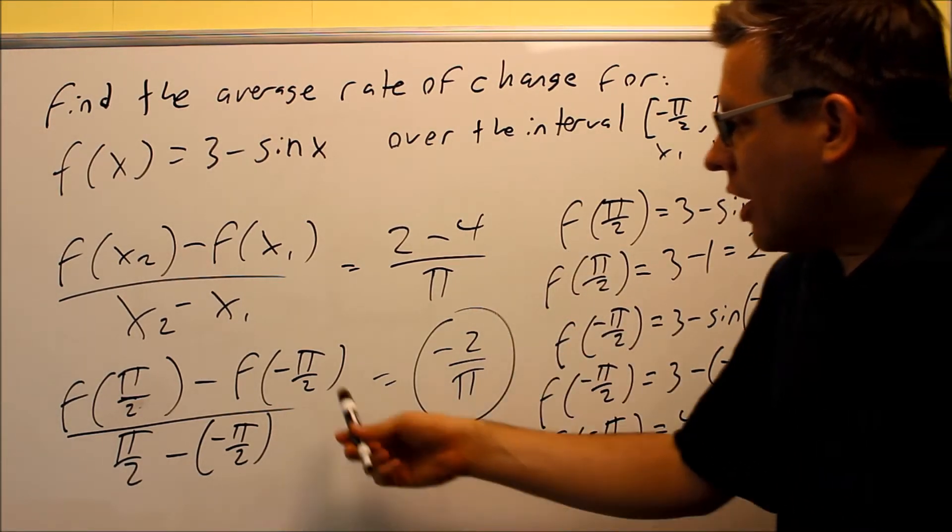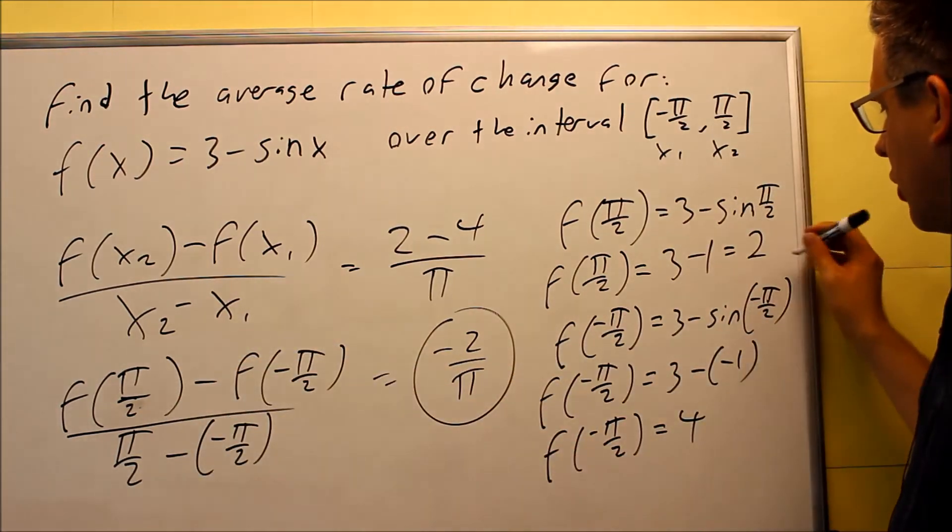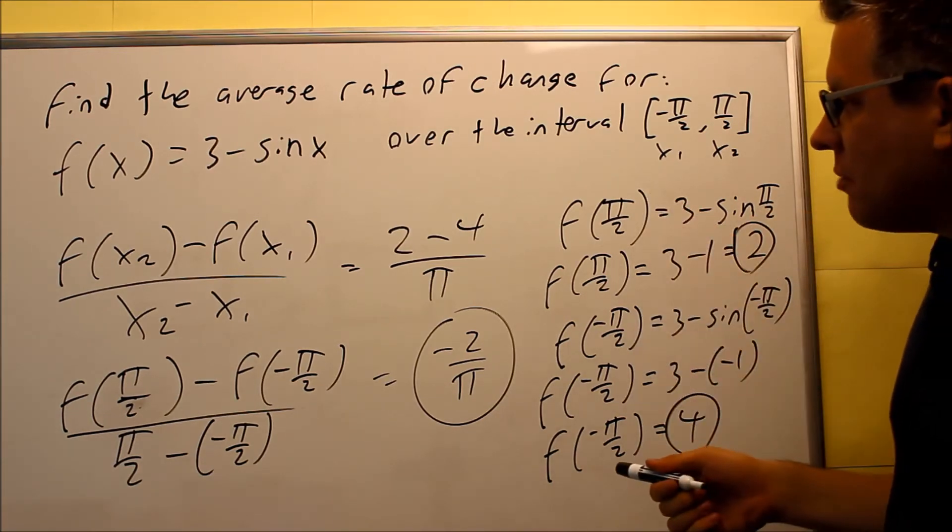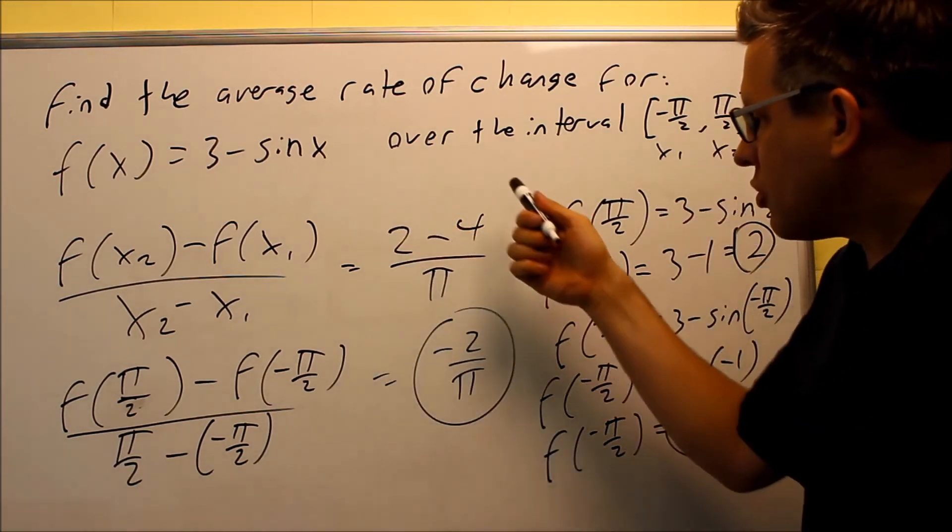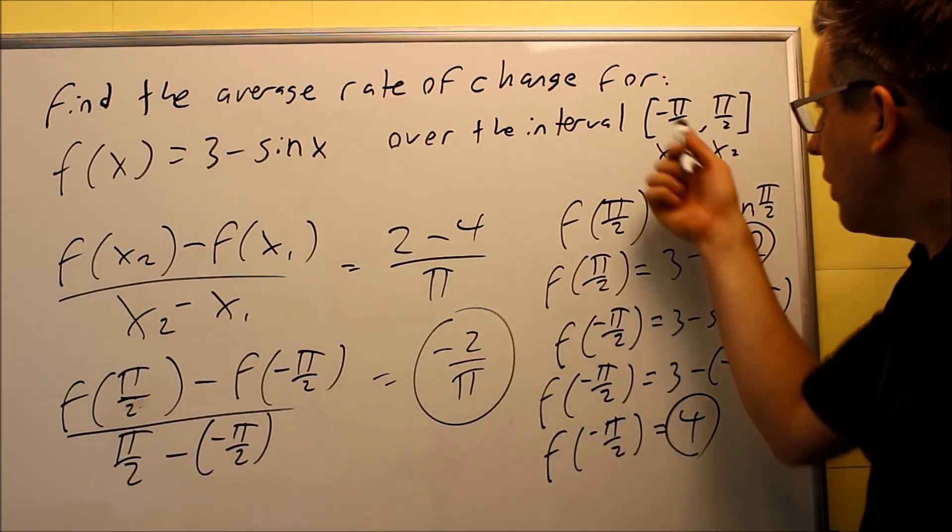It's going to be, once we put in the values—these two values came off of the work that we did over here, the 2 and the 4. Those are the values that we got by putting these in. Plug them in here, subtract them. That's your exact value. That's your average slope on that interval.